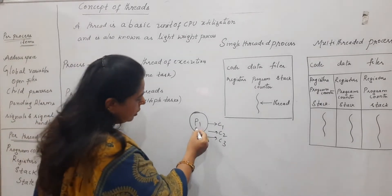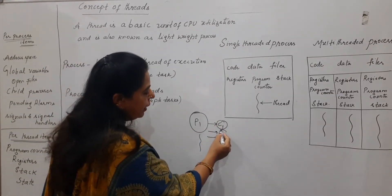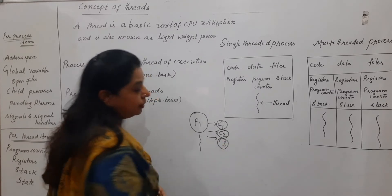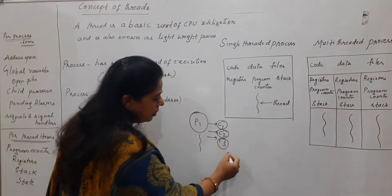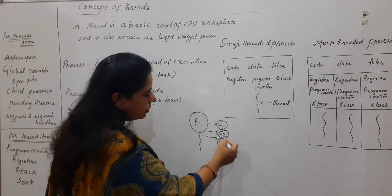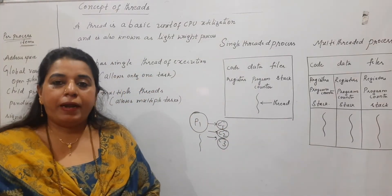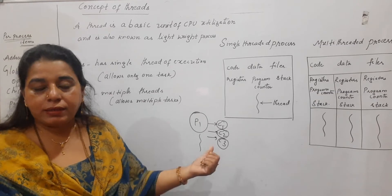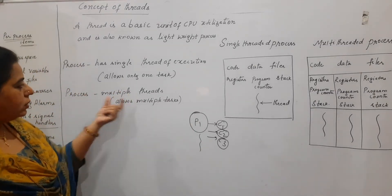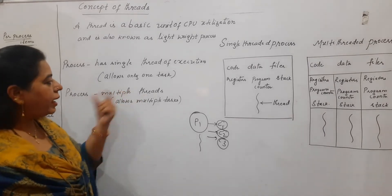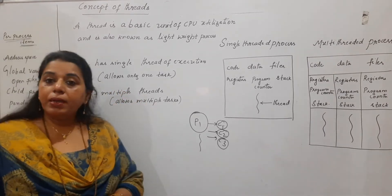And if this process creates child processes, each is carrying out independently another task. So all these are once again processes only — child process 1, child process 2, child process 3. Each of these processes are performing independently their own tasks. Now in the concept of threads, we say a process can have multiple threads and it allows multiple tasks.